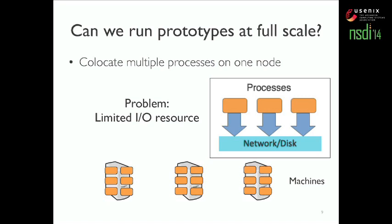For example, without collocation a process may write to disk at 100 megabytes per second. If we co-locate three processes on the same disk, each can only write at 33 megabytes per second. So they cannot run at full speed, and therefore we still cannot push our system to its limit.